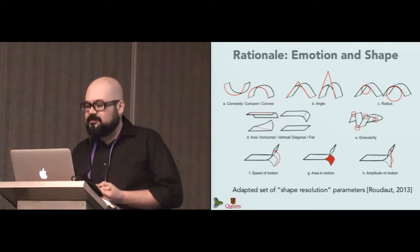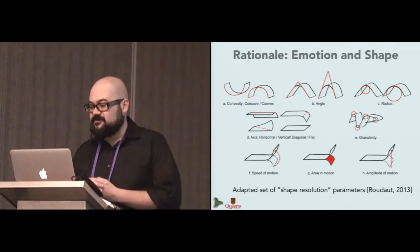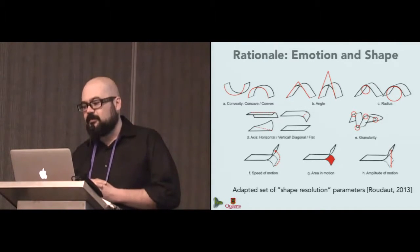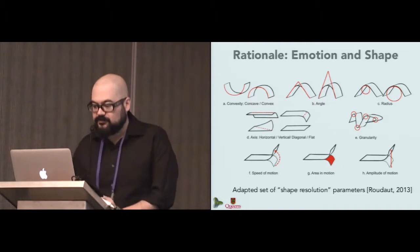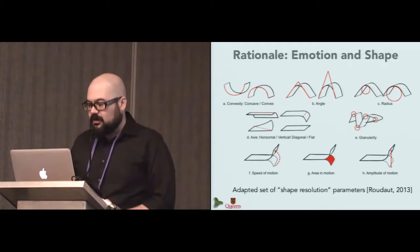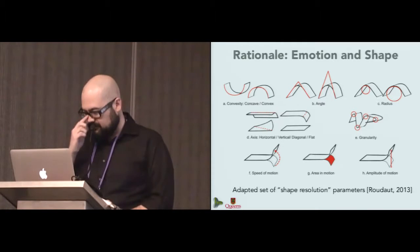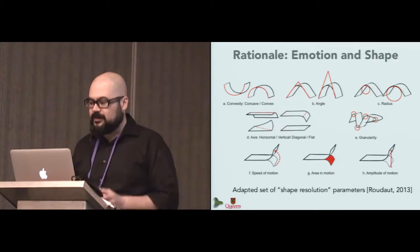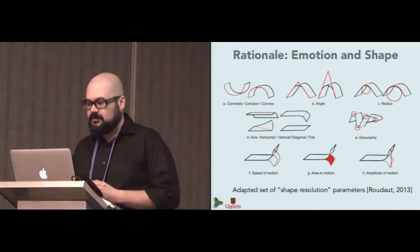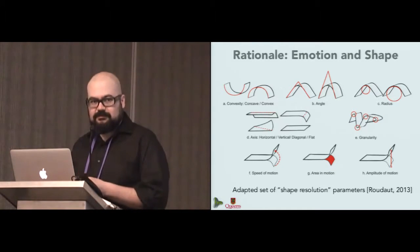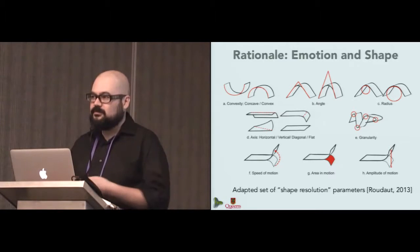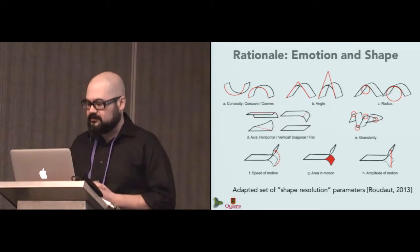On the shape side, we wanted to characterize shapes, so we used an adapted set of parameters from the shape resolution framework. This framework was proposed by Roudaut et al. for describing self-actuated flexible mobile devices. Our set of features included the convexity or concaveness of the device, the angle and radius of bend, the axis of bend, that is if the device has been mainly bent in horizontal or vertical axis, or diagonally.